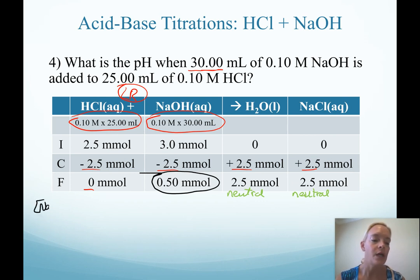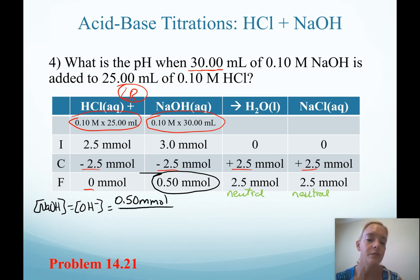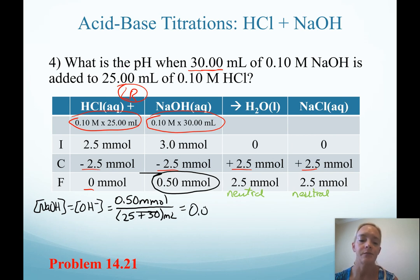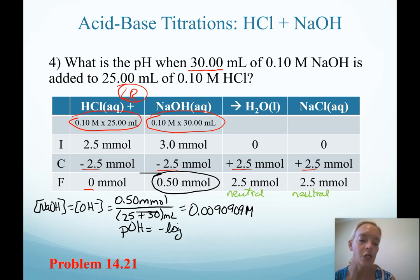Similar to what we did in region two, I need to calculate concentration. Recognize that for our base, because it dissociates in a one-to-one ratio, the concentration of sodium hydroxide will equal the concentration of hydroxide. I calculate concentration as millimoles divided by total volume. Our total volume is the 25 mL of acid plus the 30 mL from the base, giving 55 mL total — so just writing 55 in the denominator is fine. Our concentration of hydroxide is 0.009090 repeating. Because this is our base, taking the negative log of that concentration gives us our pOH value.